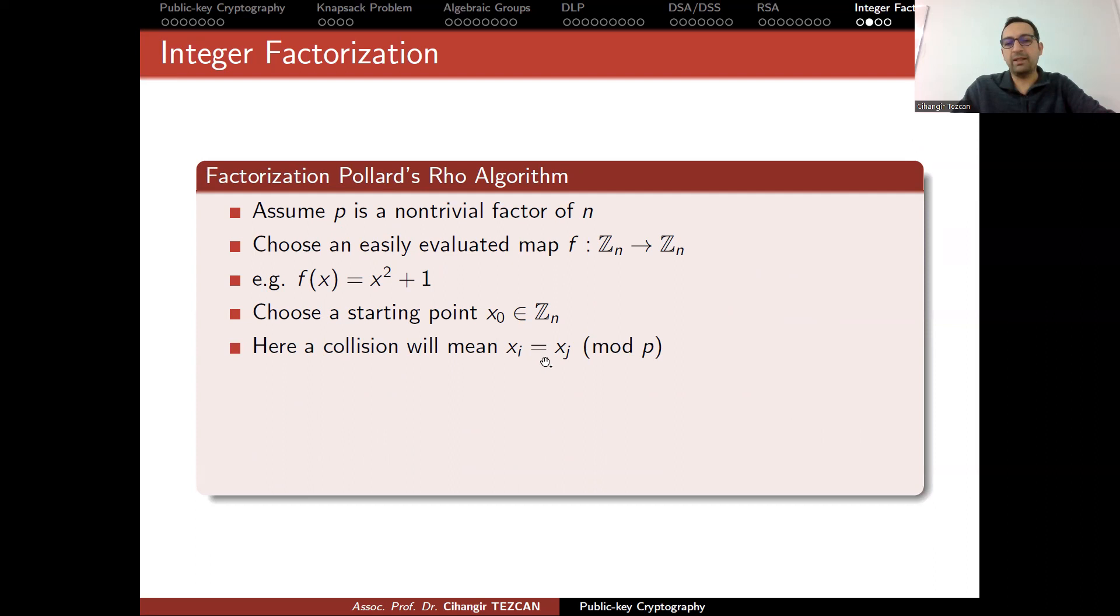A collision will mean xi equals xj modulo P. If this is the case, this means P divides xi minus xj. But we also have P divides N, because we chose N in RSA as P times Q. So P divides this and P divides that. This would mean that P divides the greatest common divisor of xi minus xj and N.